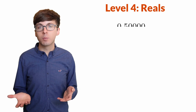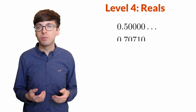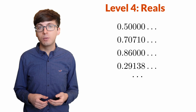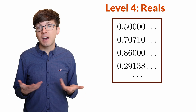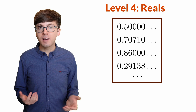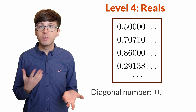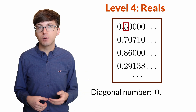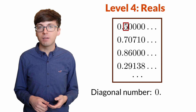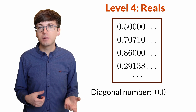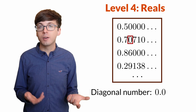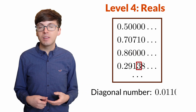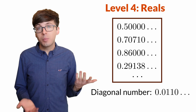We're assuming we can make a perfect list of all the real numbers with their room assignments. Maybe the first room is assigned to 0.5, and the second room to the square root of 2 divided by 2, and so on. Now, let's look at the diagonal and try to find a real number between 0 and 1 that is missing from the list. Let's pick the first digit of our new number to be contrary to the first digit of the first number in the list — that digit is 5, so let's pick 0. For the second digit, we look at the diagonal value of the second number, which is 0, so let's pick 1. We'll continue this procedure to construct each digit of our diagonal number.